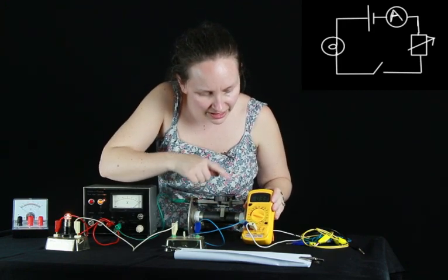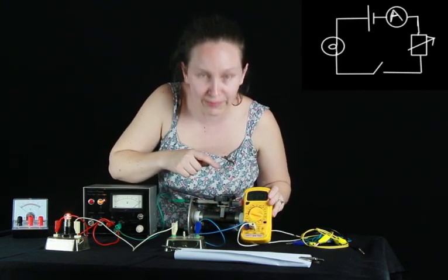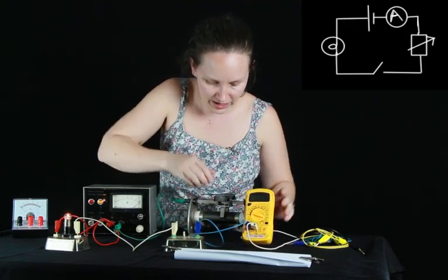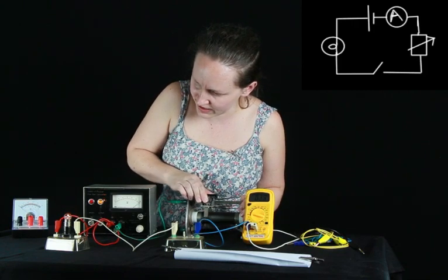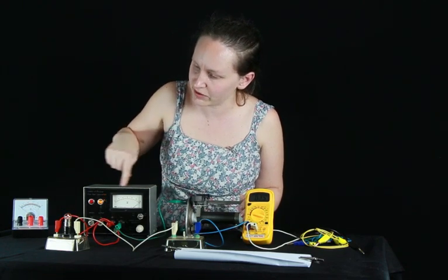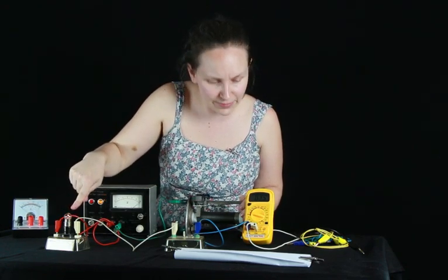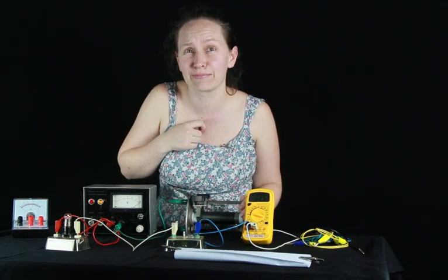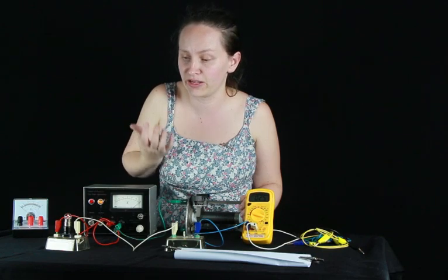So currently, the current is reading as 3.3 milliamps. And you can see, if we change the resistance, as the resistance increases, the light becomes dimmer, and the current's now gone down to 2.5 milliamps. So there's less current flowing through the circuit.